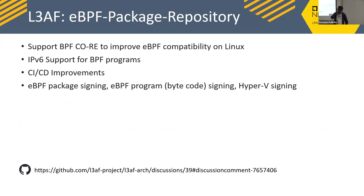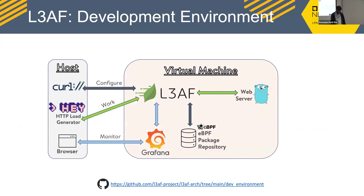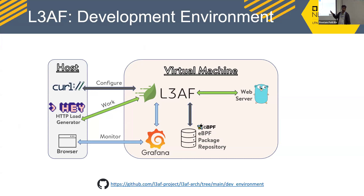The dev environment can be brought up in under three minutes. Anyone who wants to try writing eBPF programs can go to the LEAF repo — there is a link for the dev environment. You can do a vagrant up or create a VM and run the setup Linux VM script, which sets up everything: deploys the package repository, downloads everything, builds everything, and then you call the API to load the programs.